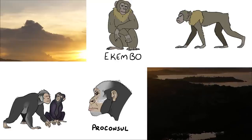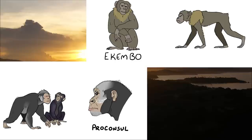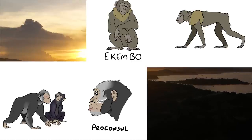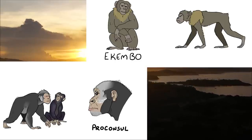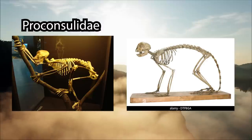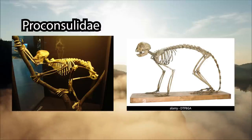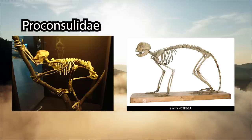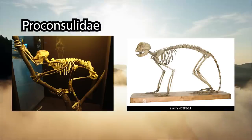This honing complex is highest in Proconsul africanus and lowest in Ekembo heseloni when considering members of the Proconsulidae family. The post-crania of these apes continue the trend of primarily old world monkey characteristics, but with a handful of ape traits.